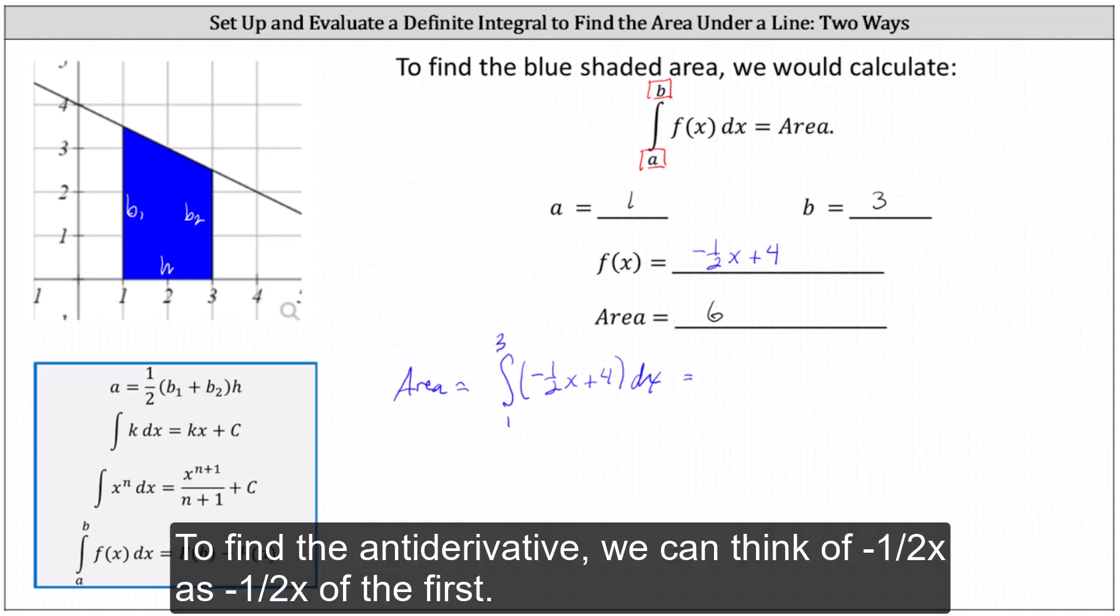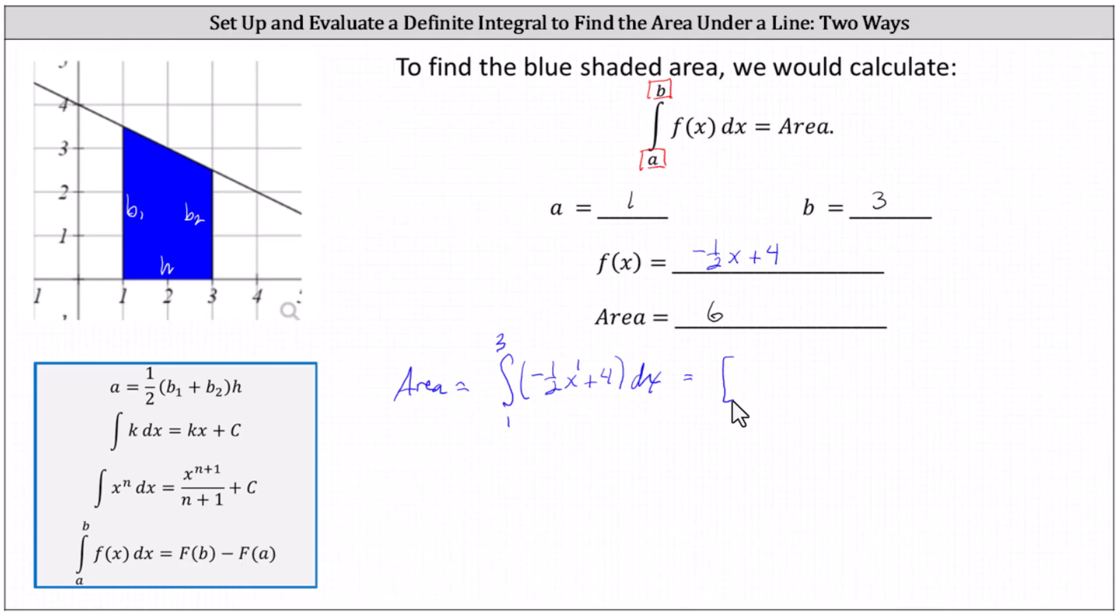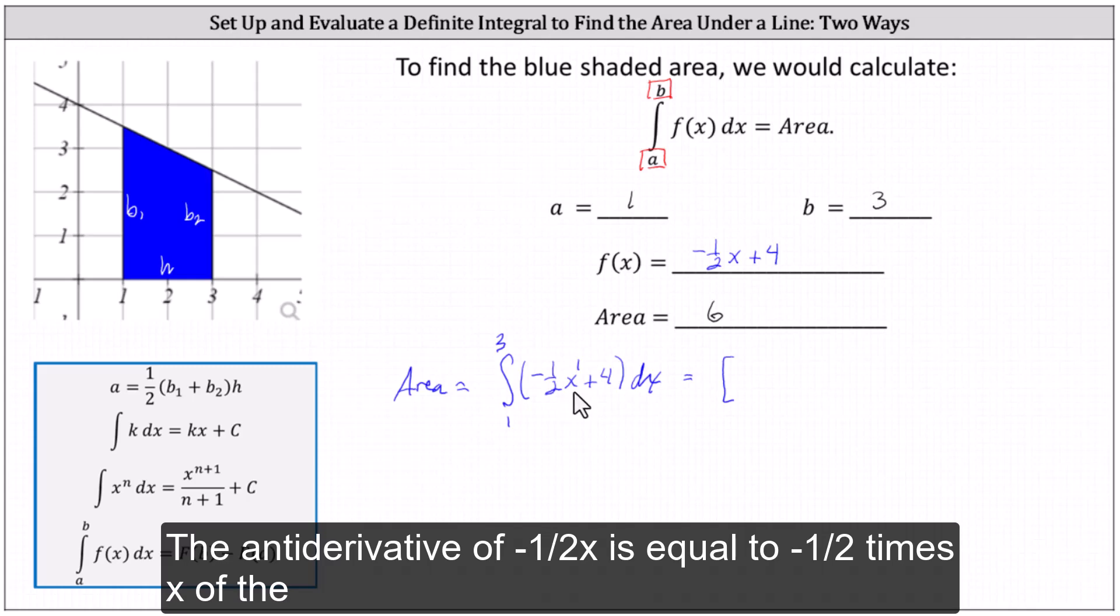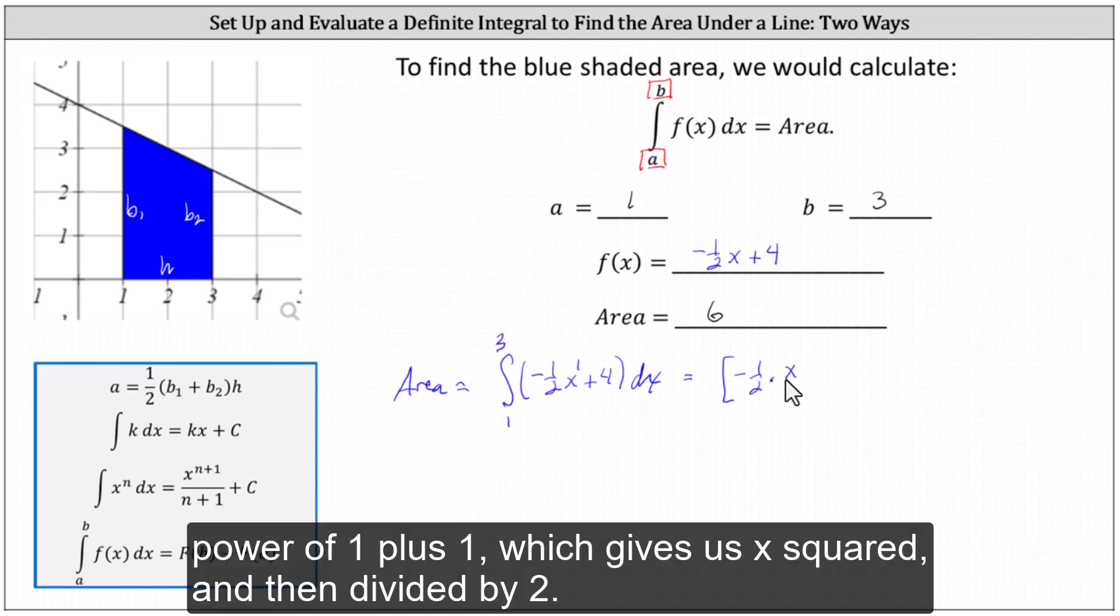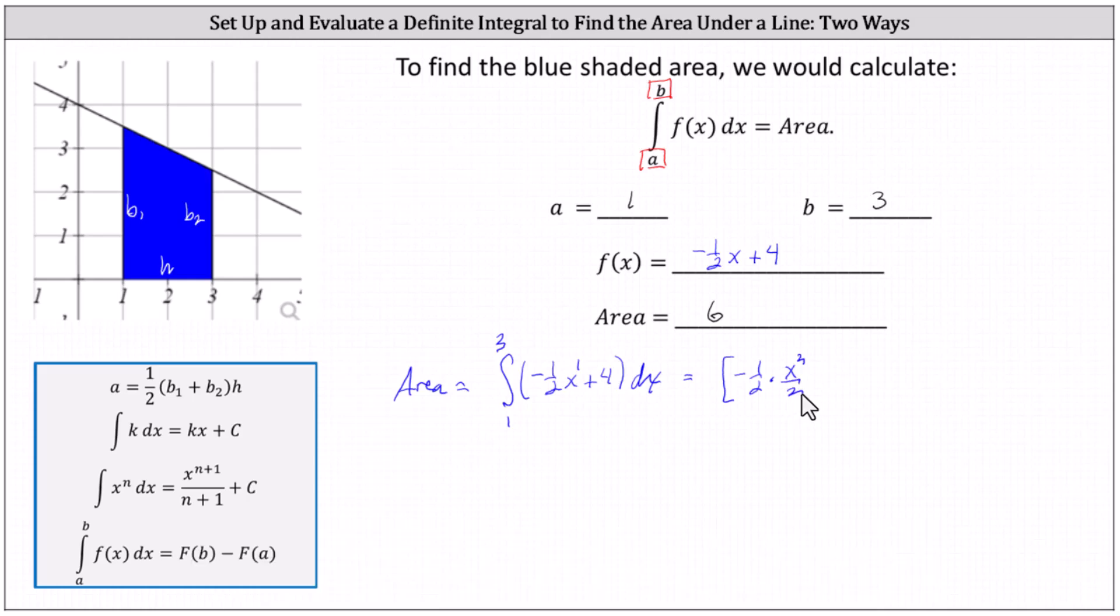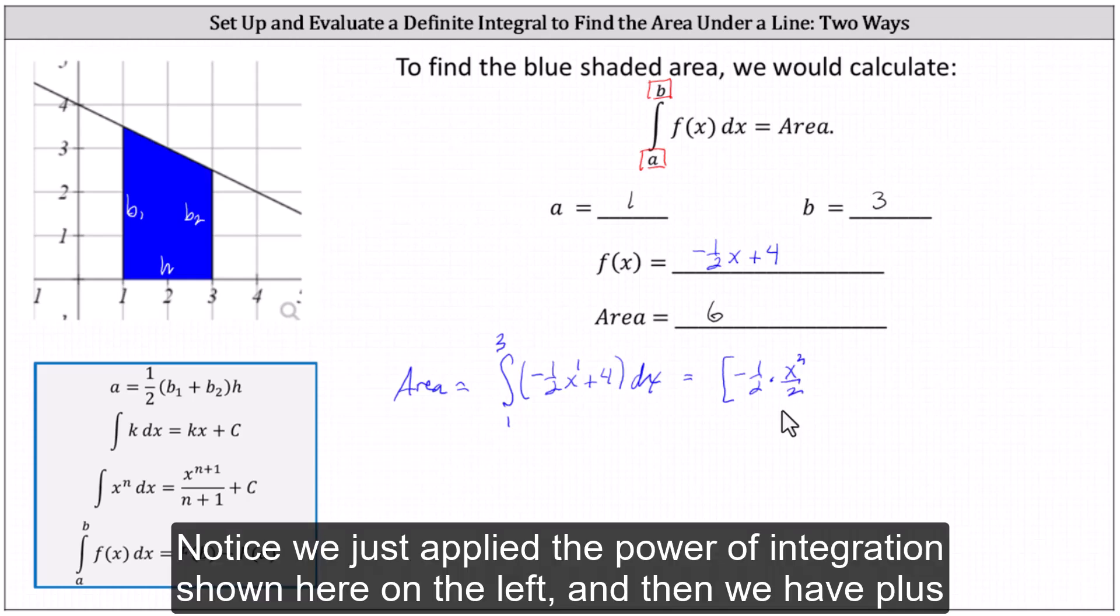To find the antiderivative, we can think of negative one-half x as negative one-half x to the first. The antiderivative of negative one-half x is equal to negative one-half times x to the power of one plus one, which gives us x squared, and then divided by two. Notice we just applied the power rule of integration shown here on the left.